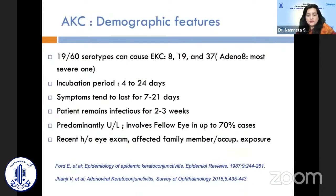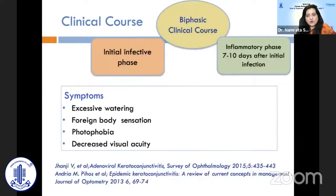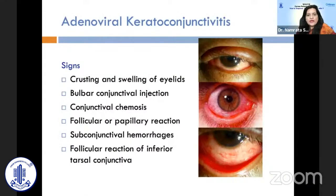The patient remains infectious for 2 to 3 weeks. It is predominantly unilateral and involves the fellow eye in almost 70 percent of cases. There may be a recent history of eye exam, an affected family member, or occupational exposure. It has a biphasic clinical course: an initial infective phase and an inflammatory phase occurring 7 to 10 days after infection. Patients complain of excessive watering, foreign body sensation, photophobia, and decreased visual acuity.